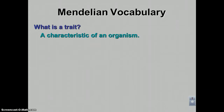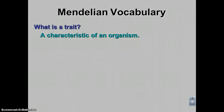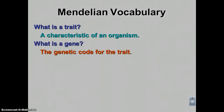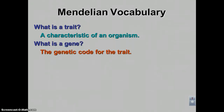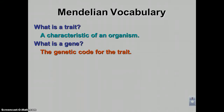Mendel studied the traits of a pea plant. A trait is a characteristic of an organism — for example, flowers would be white, pink, or purple. Those are traits. Traits are caused by genes, and remember, one gene equals one protein. The gene codes for the trait, so the trait is therefore a protein.